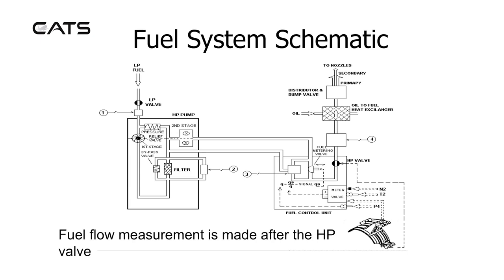Fuel system schematic. Low pressure fuel enters the high pressure pump via a low pressure valve. This passes to the fuel control unit, and the fuel control levers can meter the fuel via the high pressure valve to the engine nozzles. Fuel flow measurement is made after the high pressure valve.